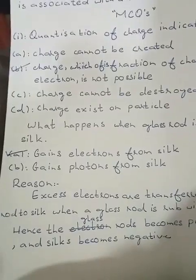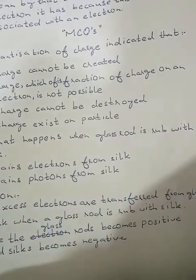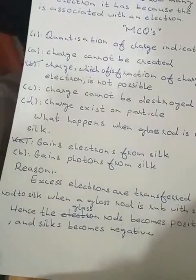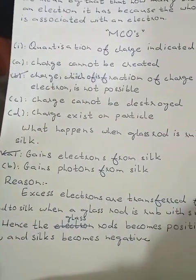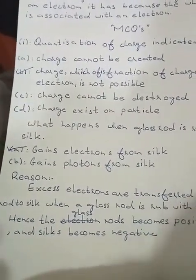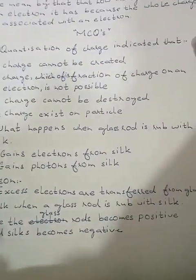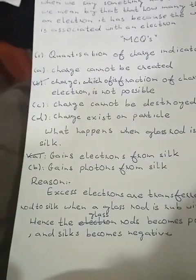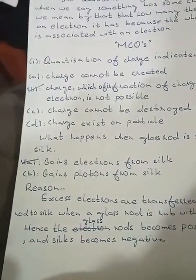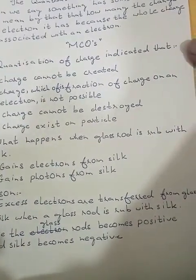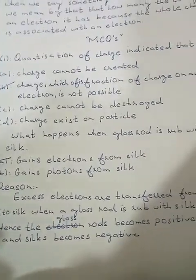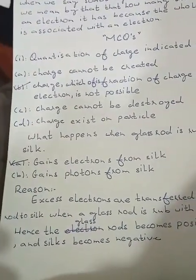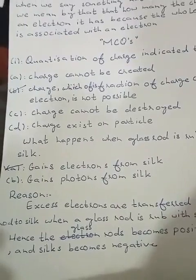Correct answer is this. When glass rod is rubbed with silk, the correct answer is it gains electrons from silk. Excess electrons are transferred from glass rod to silk when glass rod is rubbed with silk. Glass rod becomes positive and silk becomes negative.